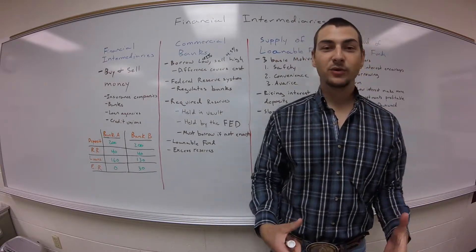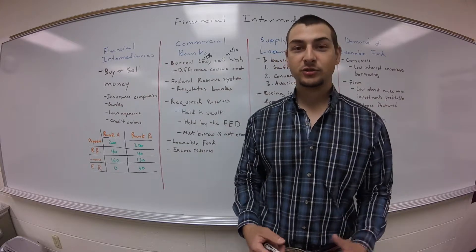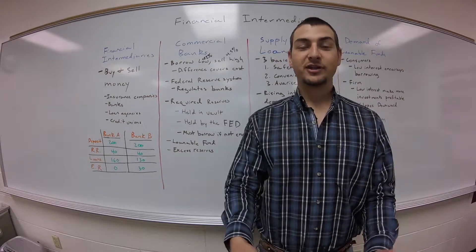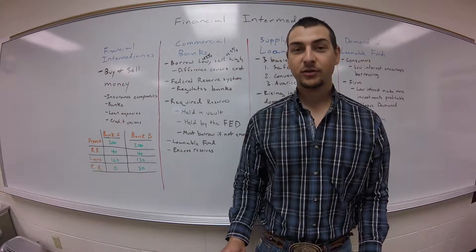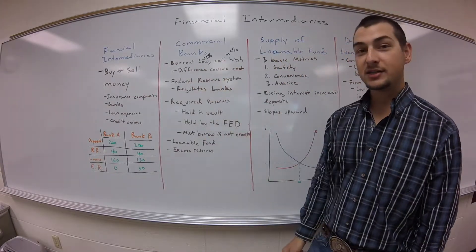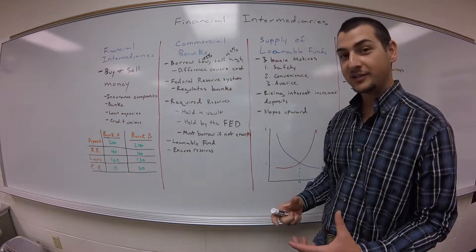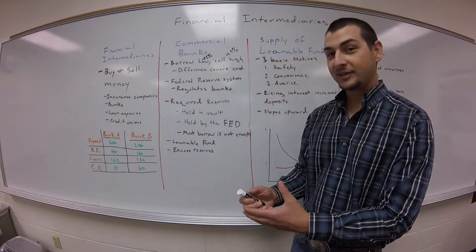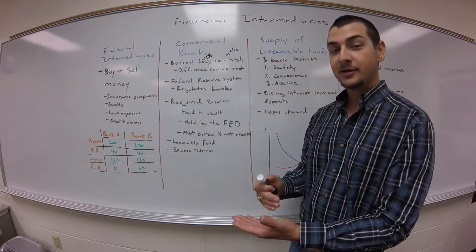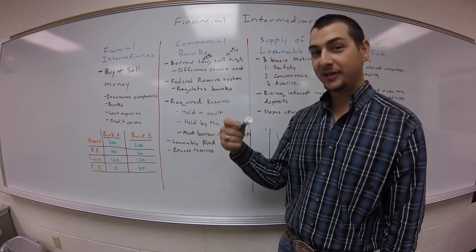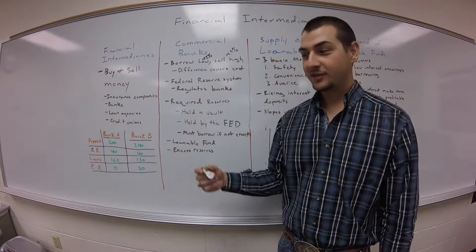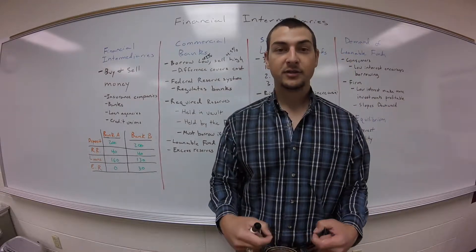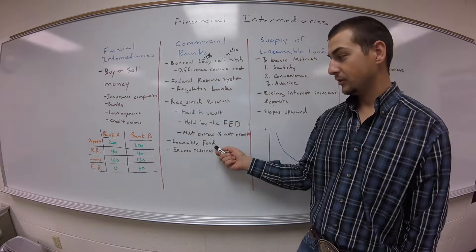A bank doesn't want to just sit on all $200 you deposited — that does them no good. Banks are in the business of buying and selling money. So they take the money you deposited and loan it out. The amount they can loan out is total deposits minus required reserves. So if you put in $200 in deposits and they're required to keep 20%, they keep $40 and have $160 left to loan out. This is known as loanable funds.